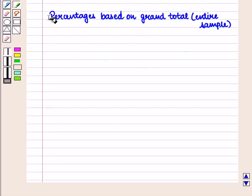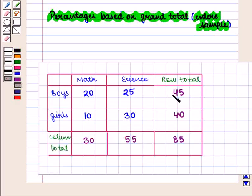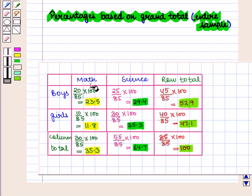Now we are going to discuss percentages based on grand total, that is the entire sample. This contingency table can be converted to percentages of the grand total by dividing each frequency by the grand total and multiplying by 100. It shows that 23.5% of the boys like maths and 29.4% like science. Similarly, 11.8% of the girls like maths and 35.3% like science.